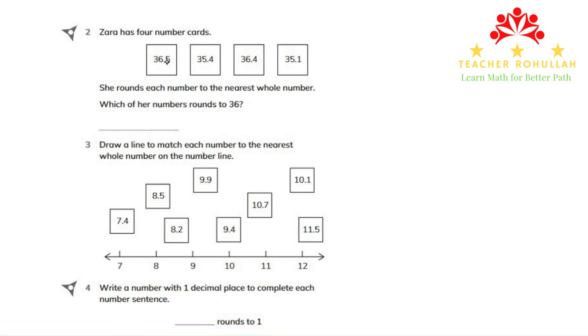So we will see one by one. 36.5 rounds to 37 because 5 is 5 or more. Or 5 shows that 36.5 is close to 37.